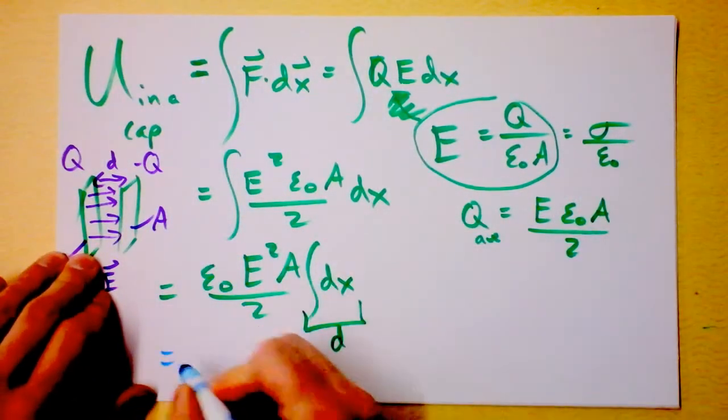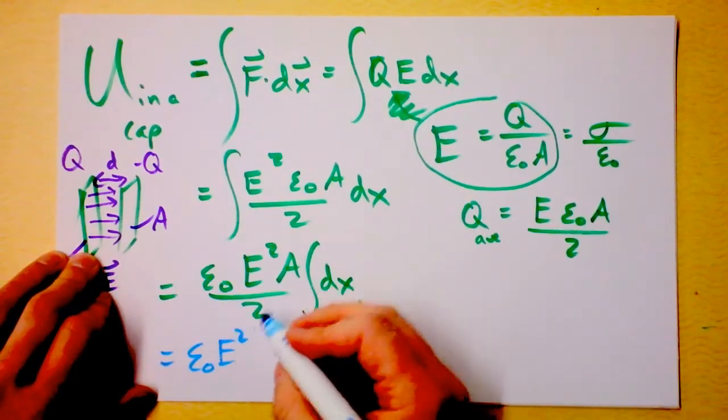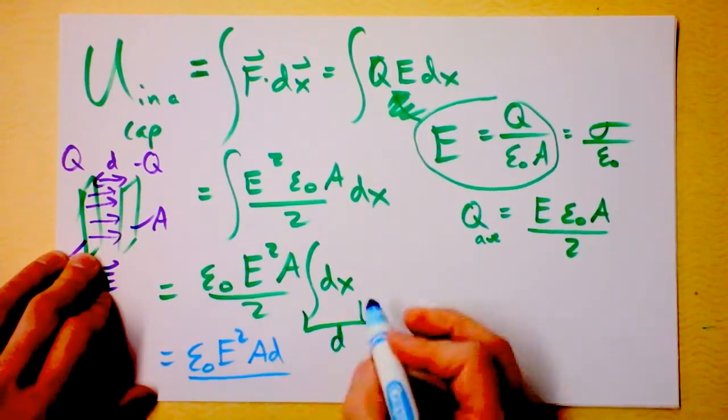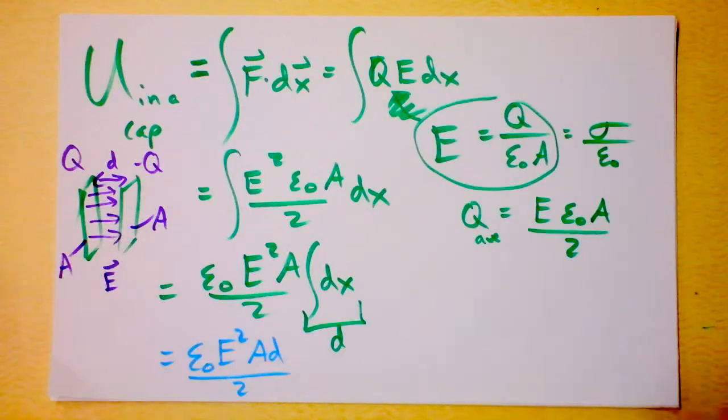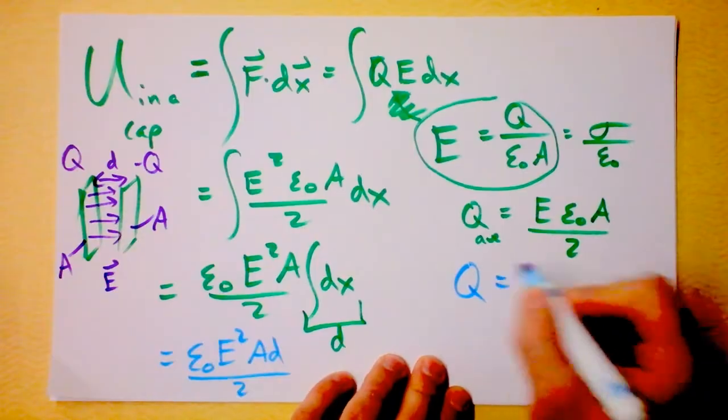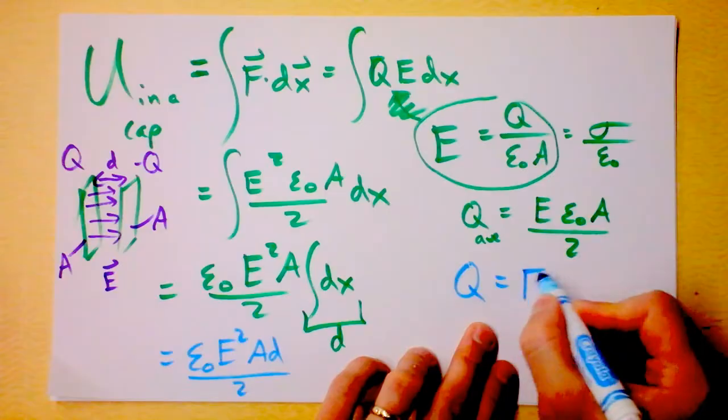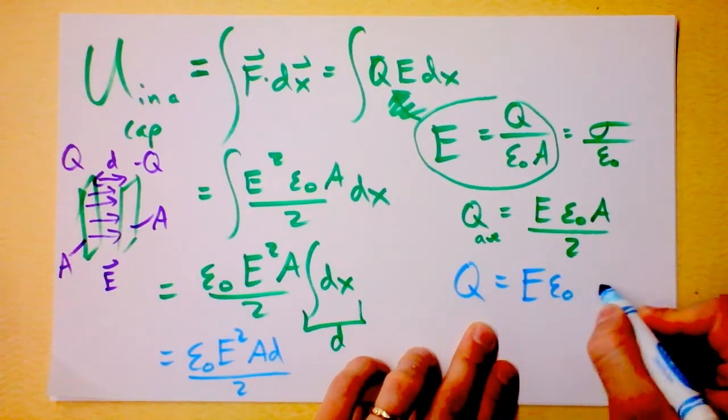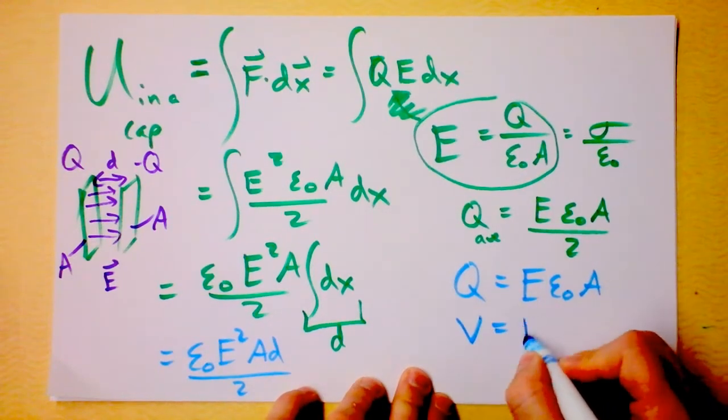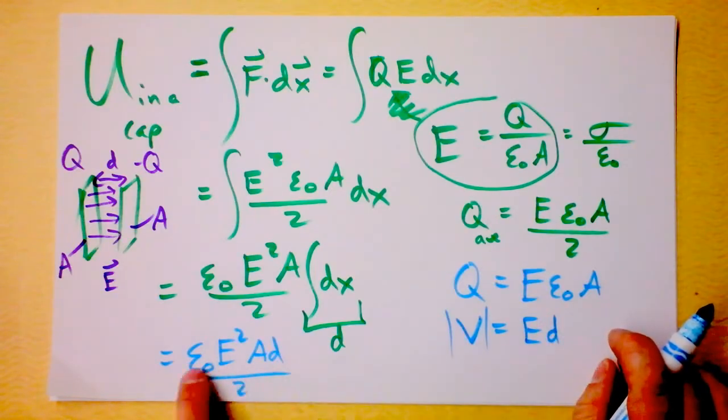Our result then is that the energy stored in a capacitor is epsilon naught times the electric field between the plates squared times the area of the plates times the distance separating the plates divided by 2. The charge on a plate is electric field times epsilon naught times area. And voltage is Ed, maybe absolute value of voltage.